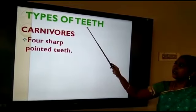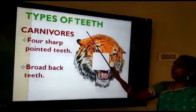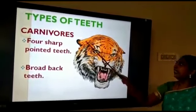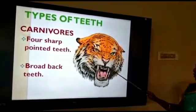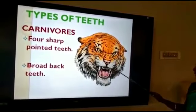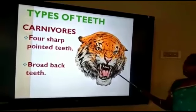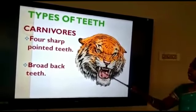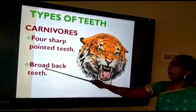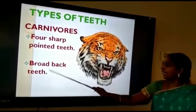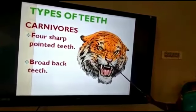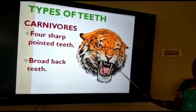Next we are going to see about the carnivores' teeth. It has four sharp pointed teeth which help them to tear the flesh. It also has broad back teeth which help them to chew their food.